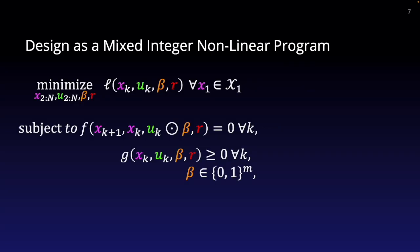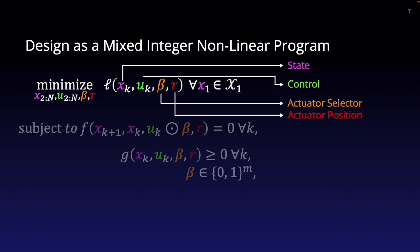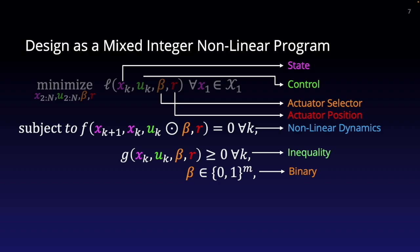This problem is formulated into the following mixed integer nonlinear program, with decision variables describing the state, control, actuator selector vector, and actuator positions. This formulation is subject to the following constraints, including nonlinear dynamics, additional task-specific inequality constraints such as thrust limits, and the binary constraint on the beta variables.